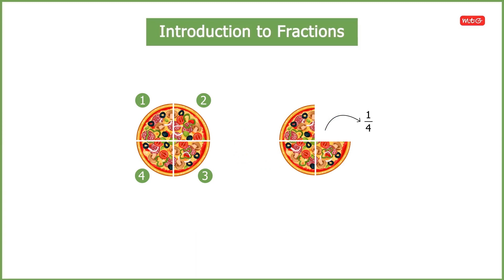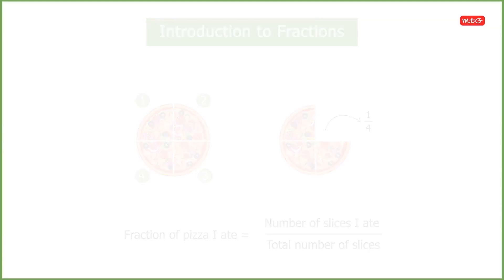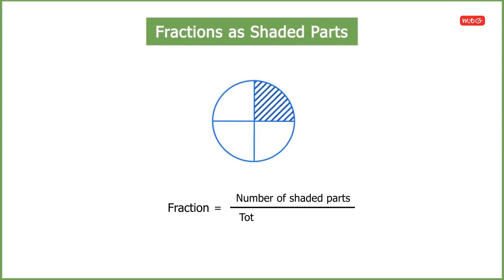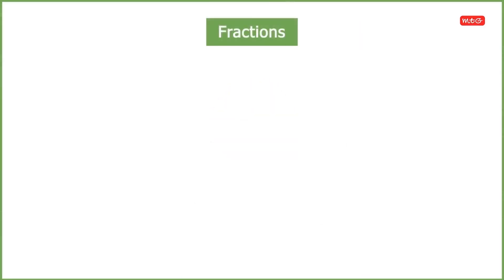The fraction of the pizza I ate is equal to the number of slices I ate divided by the total number of slices. Now, showing the slice I ate as a shaded part, the fraction is equal to the number of shaded parts divided by the total number of parts.